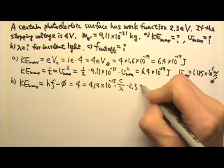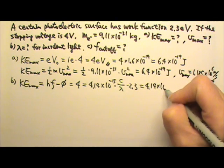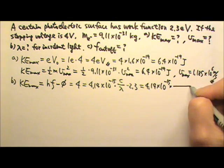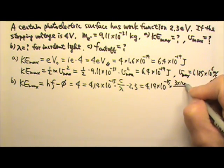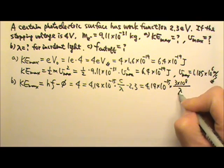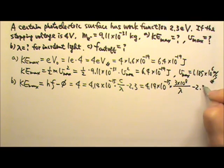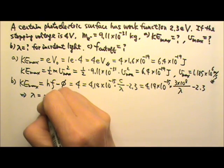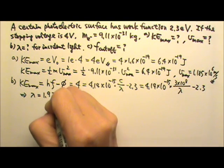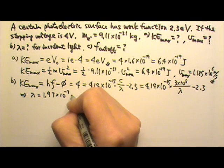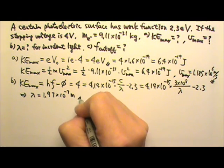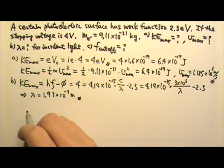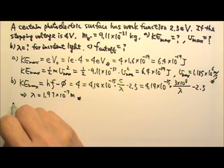This gives 6.3 eV = 4.14×10⁻¹⁵ × 3×10⁸/λ. Solving for wavelength: λ = 1.97×10⁻⁷ m = 197 nm.